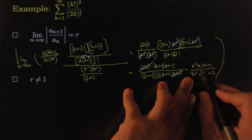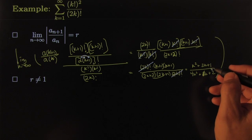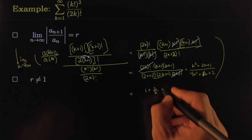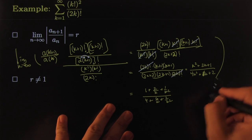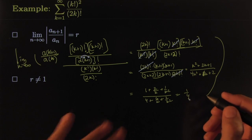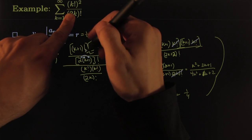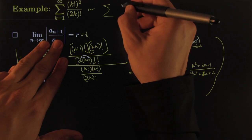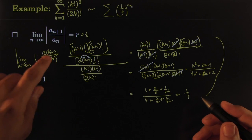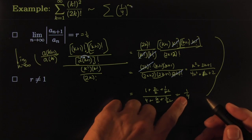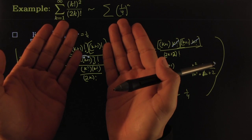As k goes to infinity, this is infinity over infinity, so divide through by k². The numerator becomes 1 + 2/k + 1/k², and the denominator becomes 4 + 6/k + 2/k². The limit as k → ∞ is clearly 1/4. Winner winner chicken dinner! This tells you that even though this series looks nothing like a geometric series, it actually behaves like one — a close relative. The ratio of consecutive terms tends to 1/4.